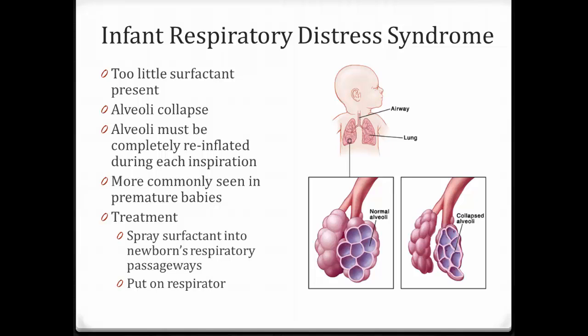One of the disorders associated with infants is called infant respiratory distress syndrome. This is more common among premature babies because premature babies tend to be low in surfactant. Surfactant is produced only in the last two months of fetal development, so if the baby is born premature — say in the seventh month — they haven't had time yet to produce surfactant. Surfactant is used to keep the lungs from collapsing; it breaks up the surface tension. Without surfactant, the alveoli collapse, and every time the baby inhales, he has to reinflate those alveoli to breathe, which takes a lot of work and is too difficult for the baby.